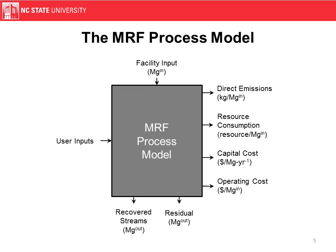Looking at this graphically, going from top to bottom, we see there's a mass in to the MRF, and then the model tells us the mass of each recovered stream with its composition, as well as the mass and composition of the residual stream. Going from left to right, the user puts in inputs to describe the system modeled, and we calculate direct emissions, resource consumption — specifically electricity and diesel use — as well as the capital and operating costs.